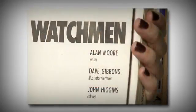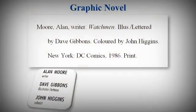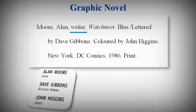Let's take Watchmen as an example. If you were doing an English paper on Alan Moore and he was the most relevant to your research, then you would begin the citation with his name. In this case, start with the writer's last name, followed by their first name, followed by a label identifying their role — in this case, writer.